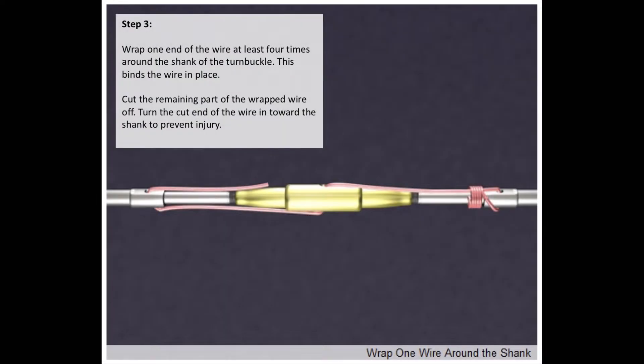Step 3: Wrap one end of the wire at least four times around the shank of the turnbuckle. This binds the wire in place. Cut the remaining part of the wrapped wire off and turn the cut end of the wire towards the shank to prevent injury from the piece of wire sticking out.